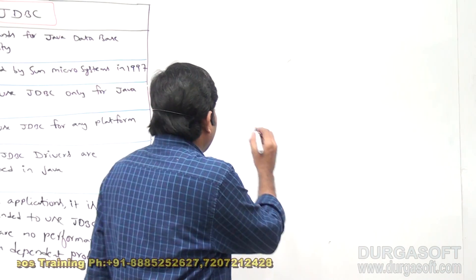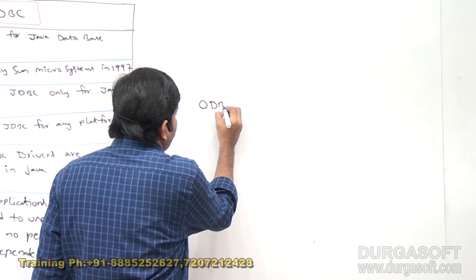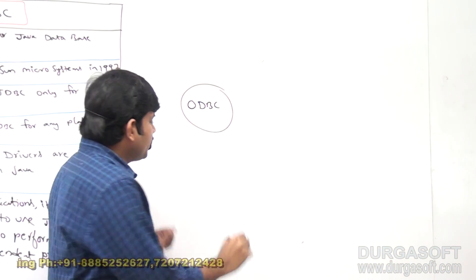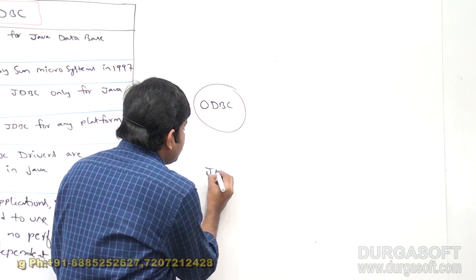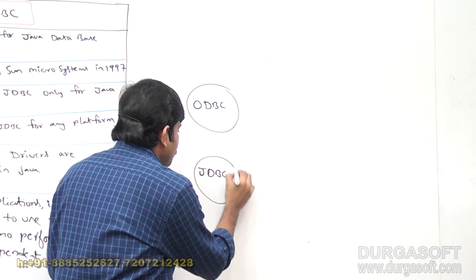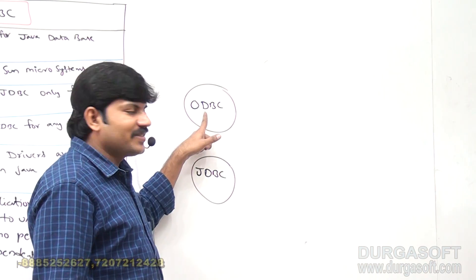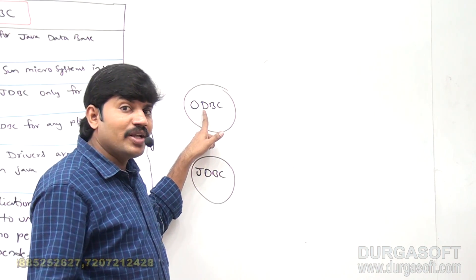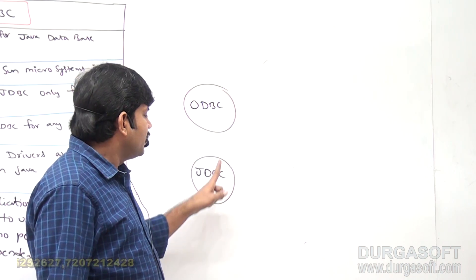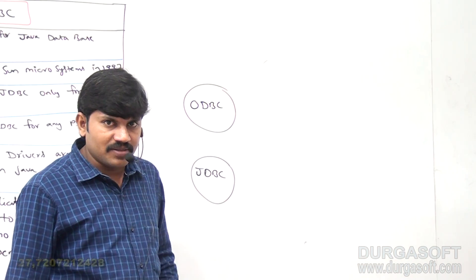ODBC is a technology from Microsoft. JDBC is a technology from Sun Microsystems. Observe that — it is Microsoft technology, and it is Sun Microsystems technology.